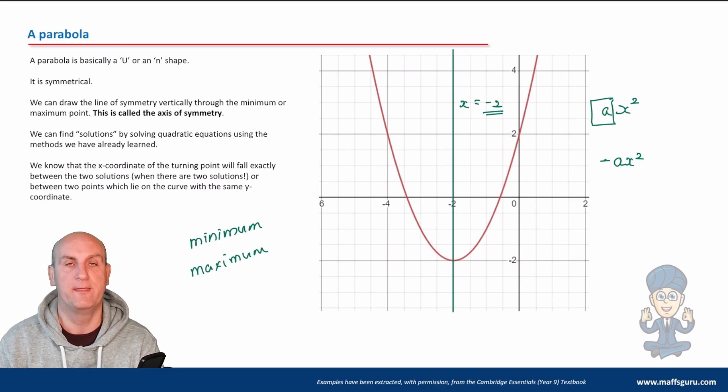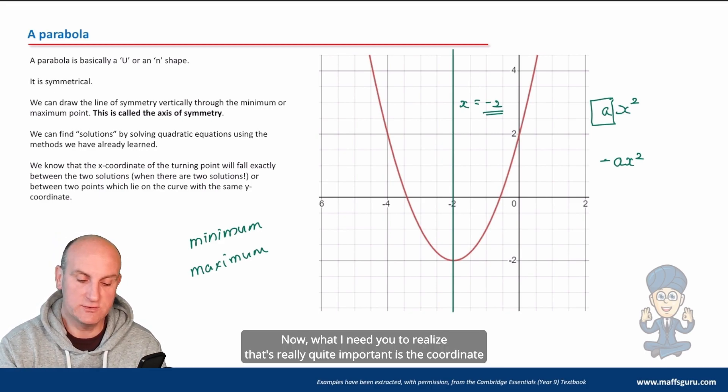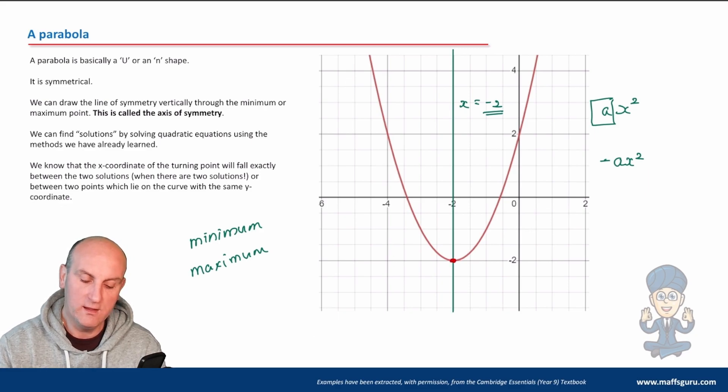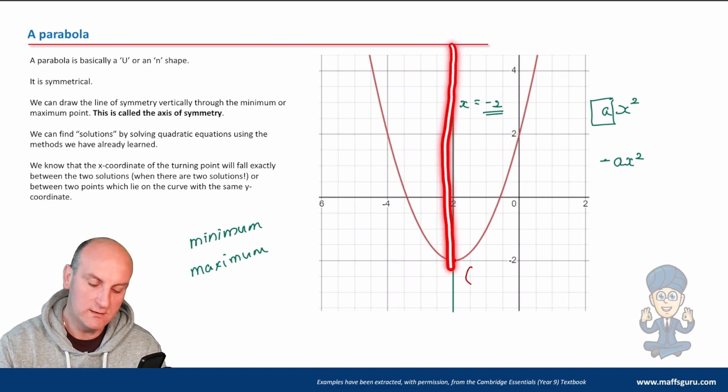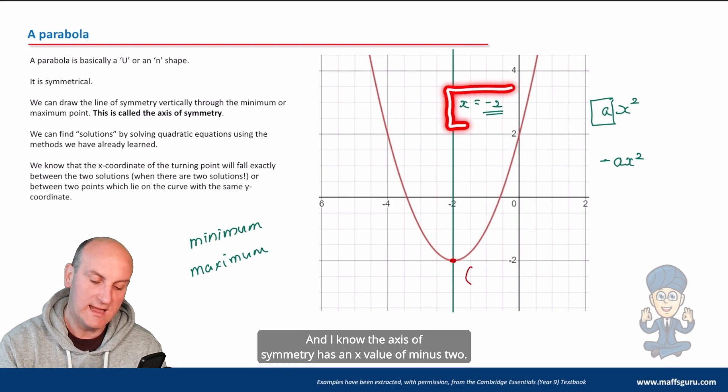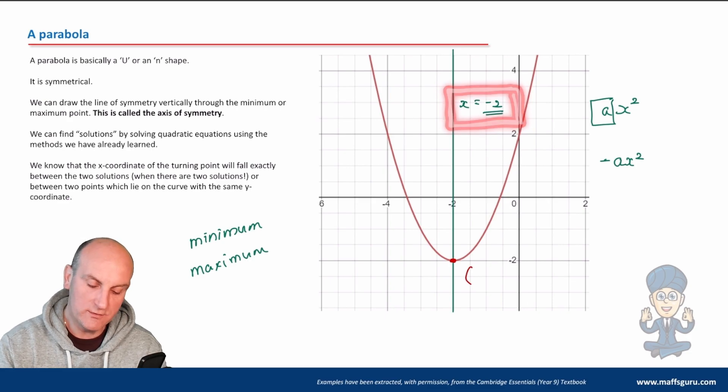What I need you to realize that's really quite important is the coordinate of that point there. I already know the x value because if you think about it, the axis of symmetry goes through that point there, and I know the axis of symmetry has an x value of minus two.